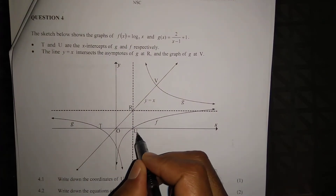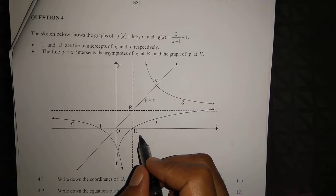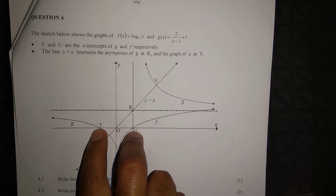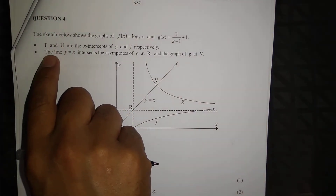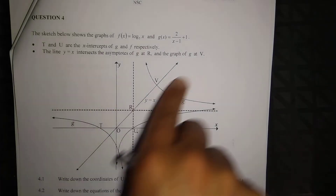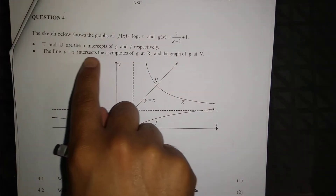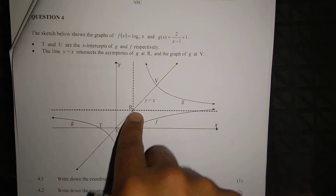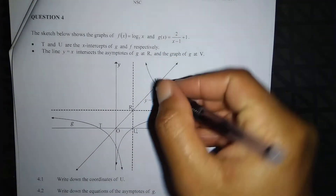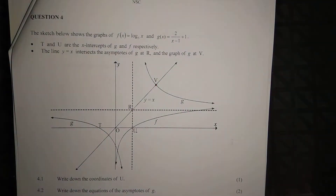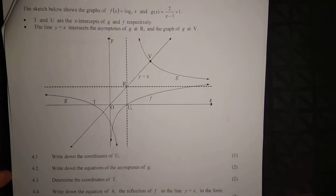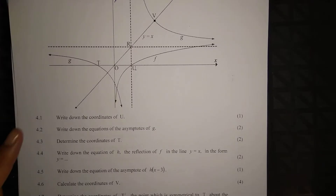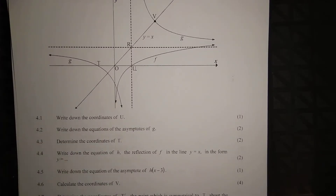T and U are the x-intercepts of g and f respectively. The line y equal to x intersects the asymptotes of g at R and the graph of g at V, so V by definition is a point of intersection. Question 4.1: write down the coordinates of U.